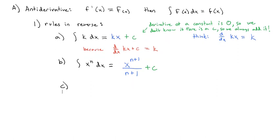Two more anti-derivative rules: the anti-derivative of e to the x dx. If we remember our derivative rules, the derivative of e to the x was just e to the x. So going backwards, the anti-derivative of e to the x is just e to the x — but don't forget the plus C.